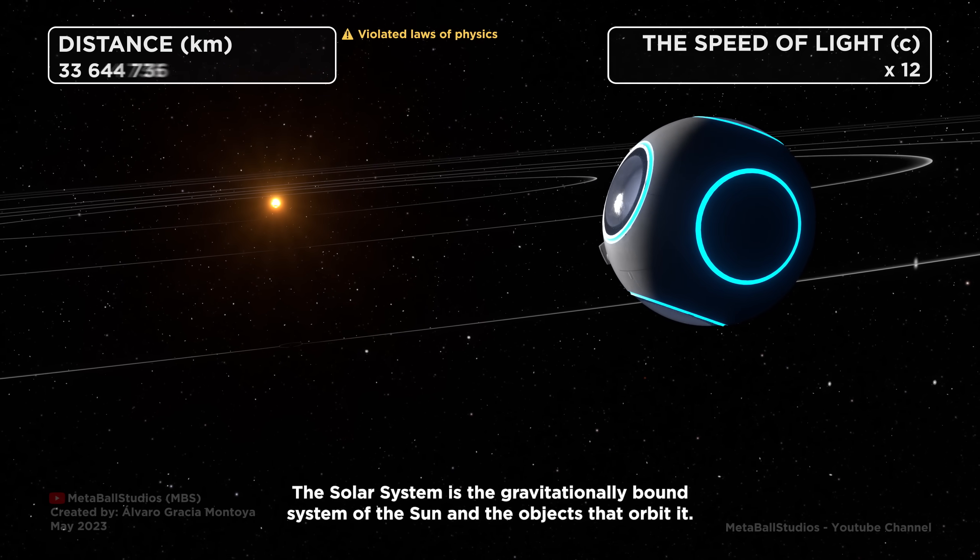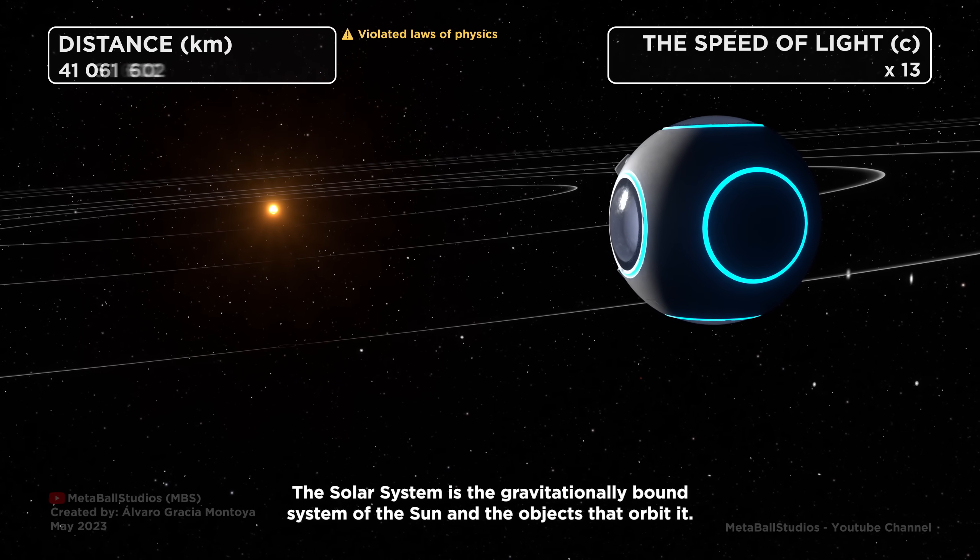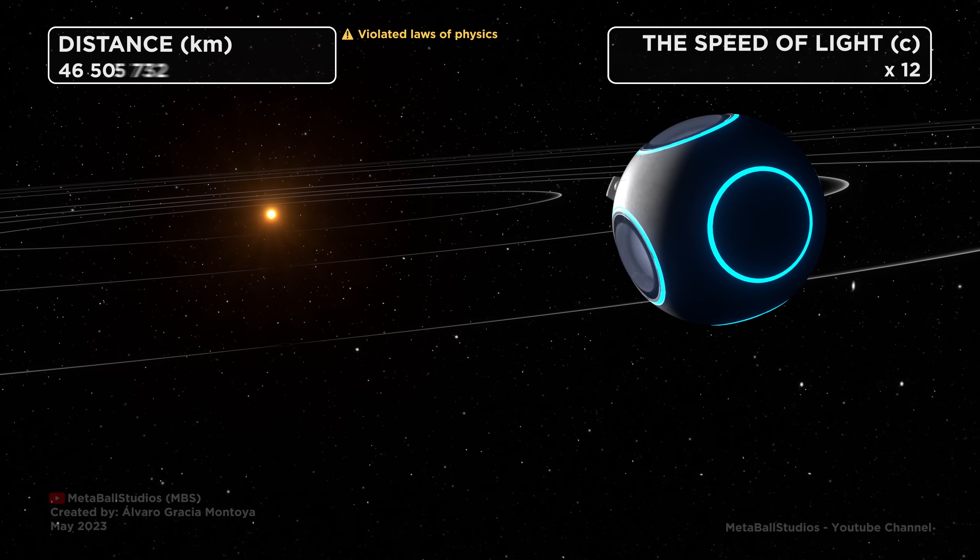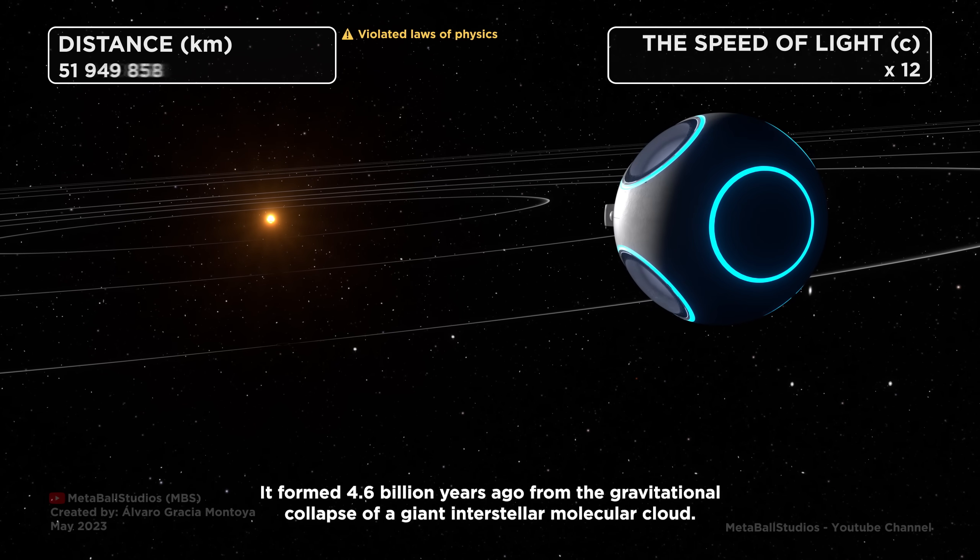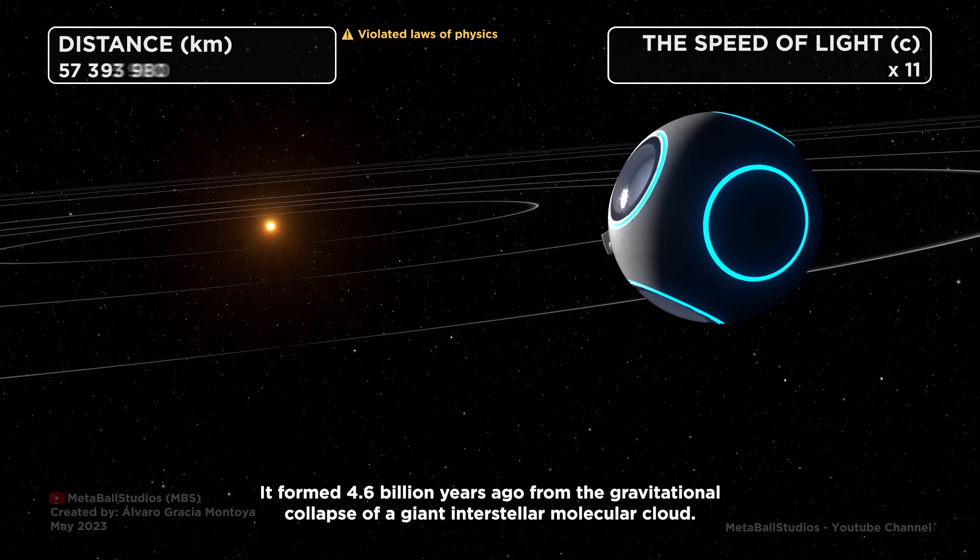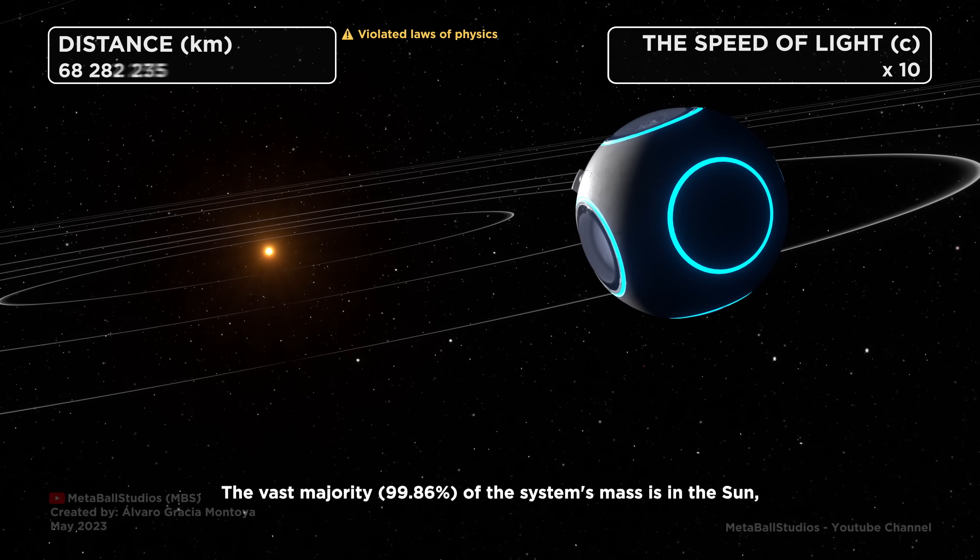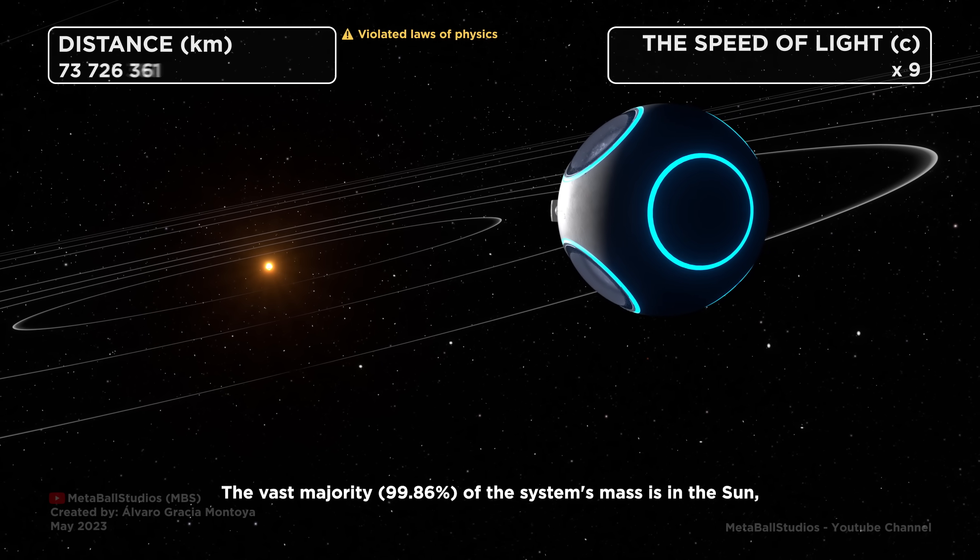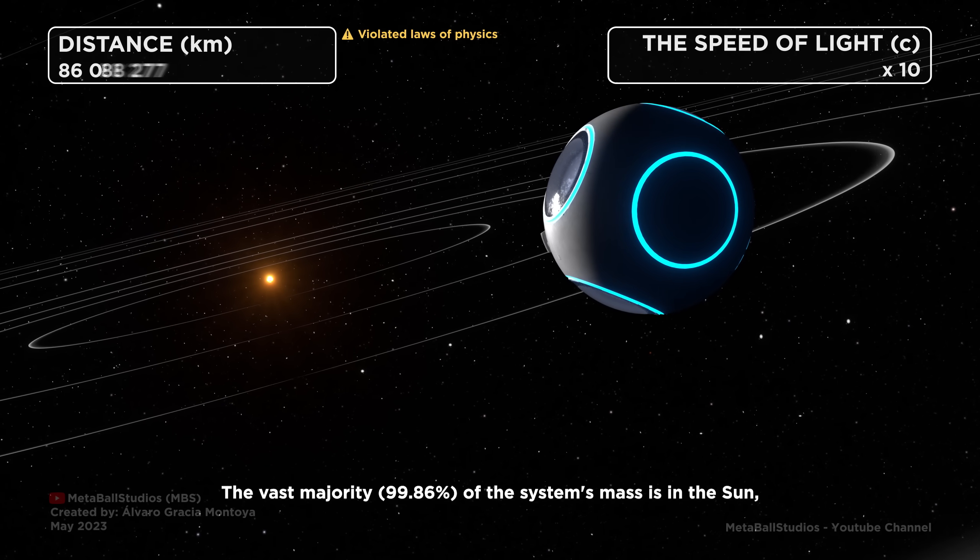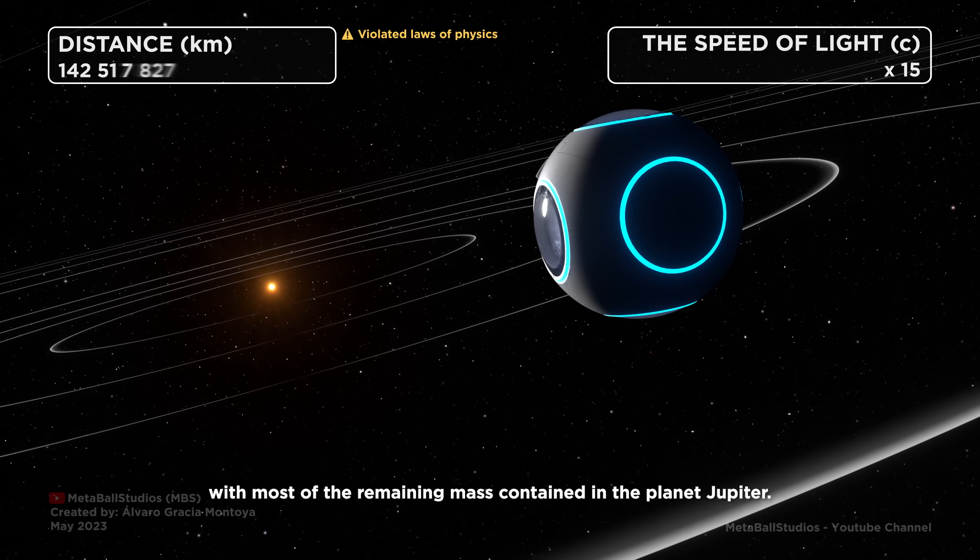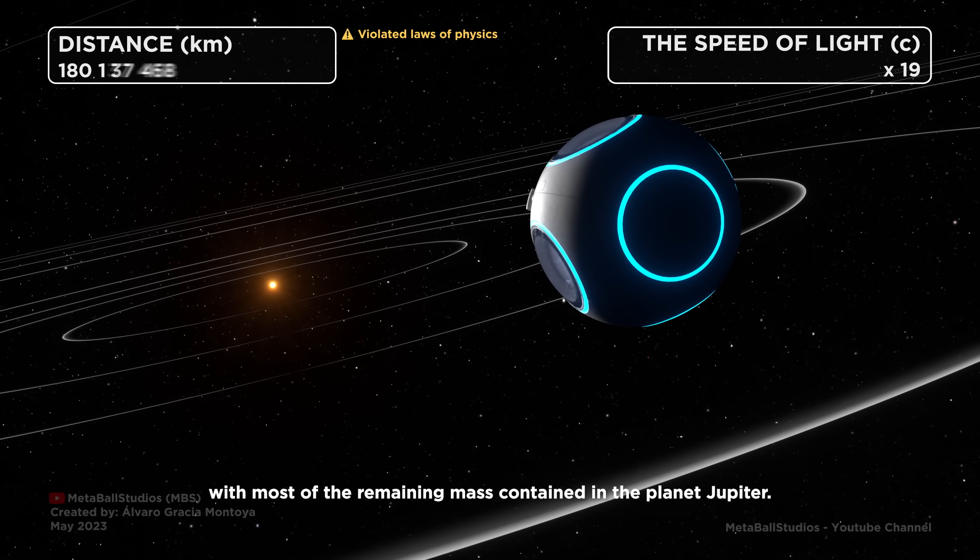The solar system is the gravitationally bound system of the Sun and the objects that orbit it. It formed 4.6 billion years ago from the gravitational collapse of a giant interstellar molecular cloud. The vast majority, 99.86%, of the system's mass is in the Sun, with most of the remaining mass contained in the planet Jupiter.